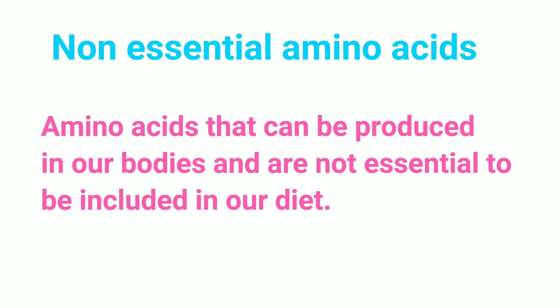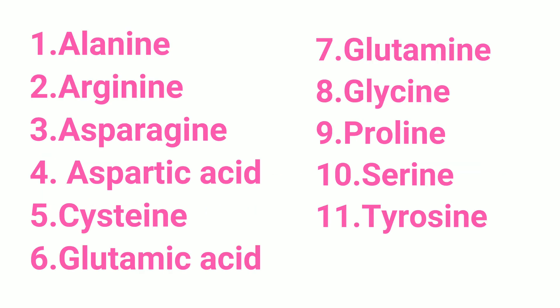Non-essential amino acids are the ones that can be produced in our bodies, and therefore not essential to our diet. They include alanine, arginine, asparagine, aspartic acid, cysteine, glutamic acid, glutamine, glycine, proline, serine, and tyrosine.